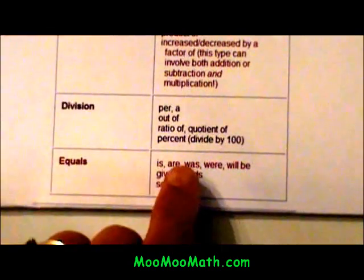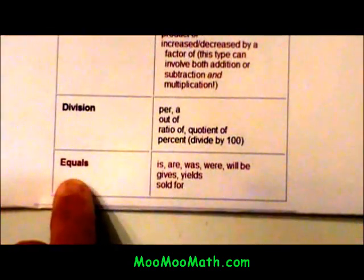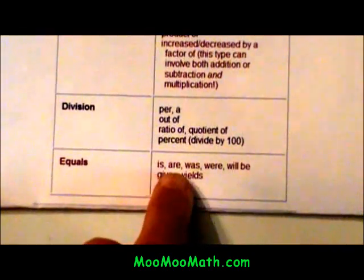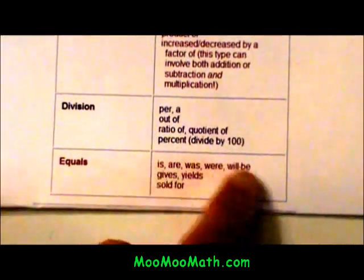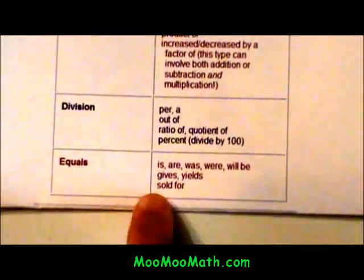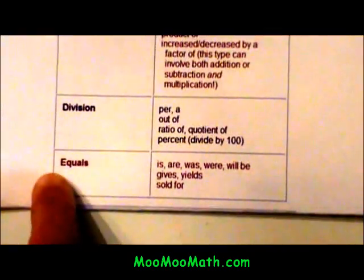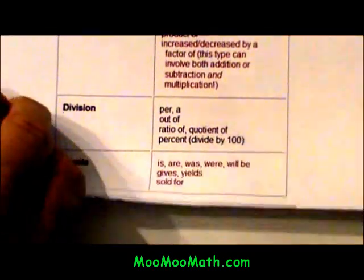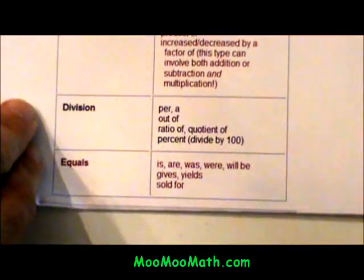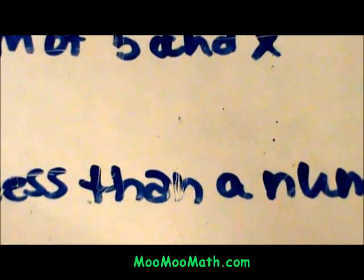And then some keywords for an equal sign when you were actually writing an algebraic equation. Is, are, was, were—notice those are all to be verbs—gives, yields, and sold for. That will be an equal sign. Okay, so let's go back using our keywords to our examples.